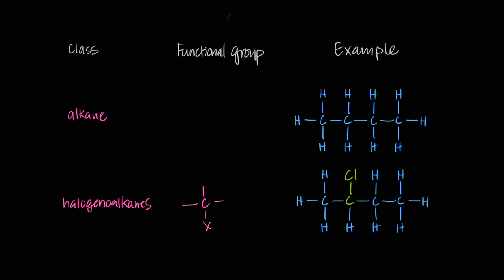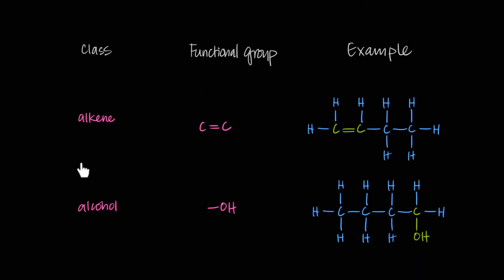Moving on to alkenes — you've definitely seen these at O-level. An alkene's functional group is a carbon-carbon double bond. It has to be a hydrocarbon, meaning all other atoms are carbons and hydrogens, but somewhere in between there's a carbon-carbon double bond. In the exam, if they ask you to name the functional group, the name is alkene and the atoms are a carbon-carbon double bond.